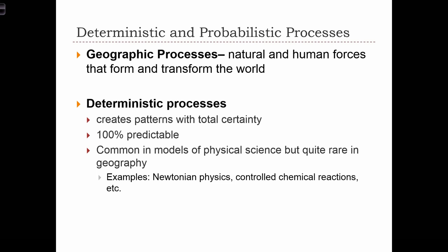These processes can sometimes be deterministic, meaning that the patterns are created with total certainty, and given a set of inputs, the output is 100% predictable. Deterministic processes are common in the physical sciences, but are actually quite rare in geography and other forms of social science. Common examples include Newtonian physics and controlled chemical reactions.